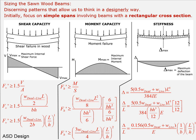This entire lecture is going to be based on this particular visual image. We're going to focus on discerning patterns that allow us to think in a designerly way, and initially we're going to focus on simple span beams involving beams with rectangular cross section. This would commonly apply to sawn lumber, glulam beams, laminated veneer lumber, and also to concrete beams. Most concrete beams have a rectangular cross section—it's rare that we find any kind of really exaggerated I-section in concrete because concrete, like wood, is not good enough in shear and needs that extra material near the neutral axis to avoid failure.